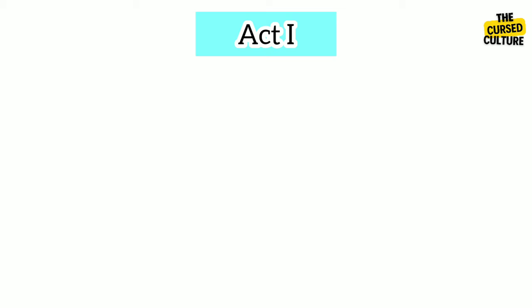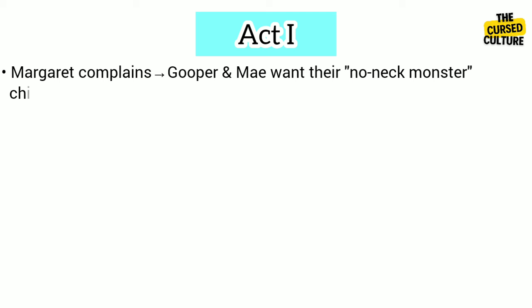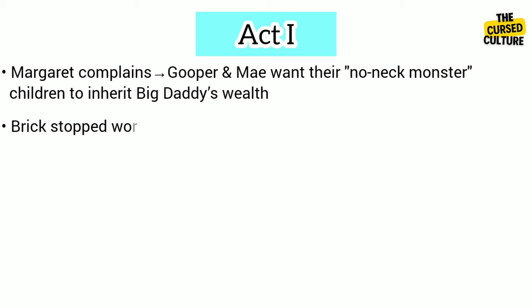As seen in the Pollitt family's dysfunctional dynamics, Act 1 begins in Big Daddy's estate mansion where Brick is taking a shower in a suite. Margaret starts complaining about Gooper, Mae, and Brick himself. She thinks that Gooper and Mae only came to visit after learning that Big Daddy is dying so their no-neck monster children could inherit his wealth. She's not happy with how Brick stopped working, started drinking, and hurt his leg trying to jump over hurdles at a high school track.